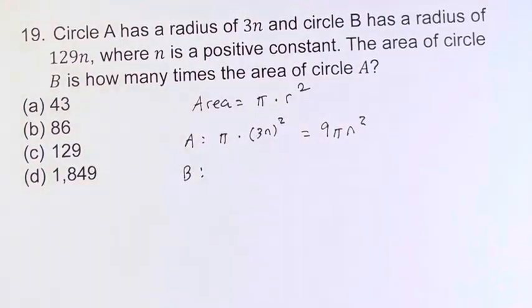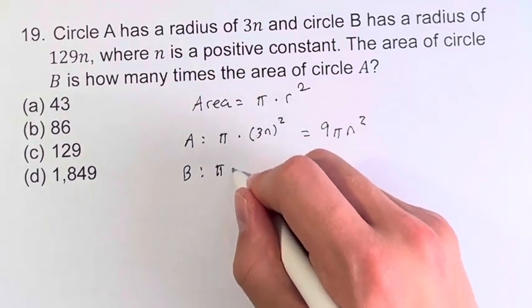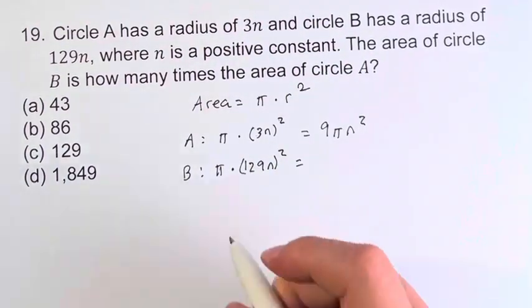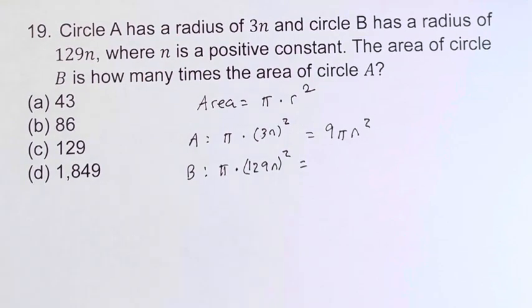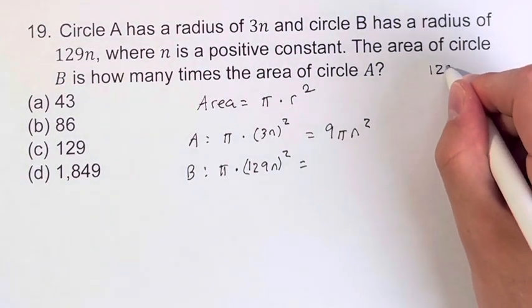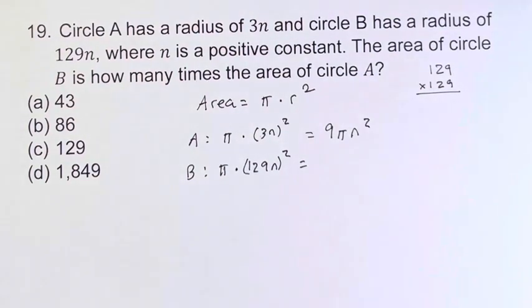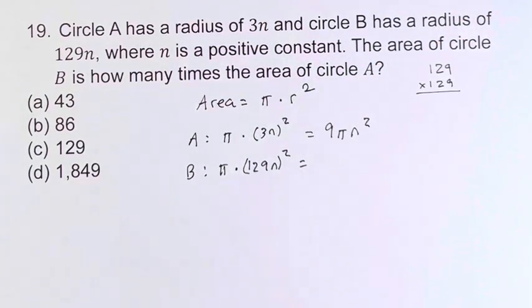For B, we have a radius of 129n, so we have π times (129n)². Now, 129 times 129 is going to be pretty complicated. So before we do that, why don't we take these and divide by the 9? Why would we do that?